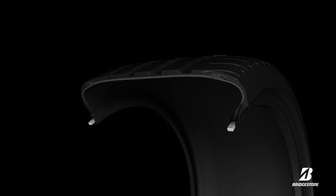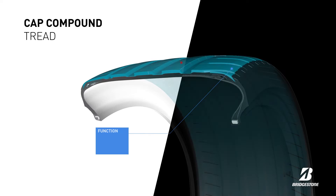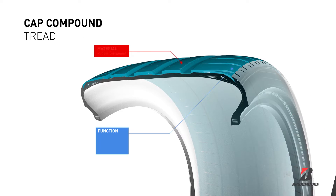The tread is in direct contact with the road. It is made of a rubber compound and designed to increase grip, resist wear and reduce rolling resistance.